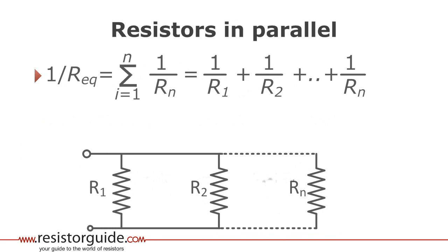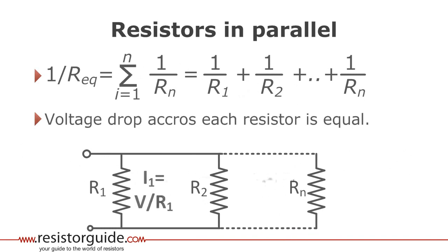Furthermore, for a parallel circuit the voltage drop across each resistor is equal. Knowing this we can use Ohm's law to calculate the current through each resistor.